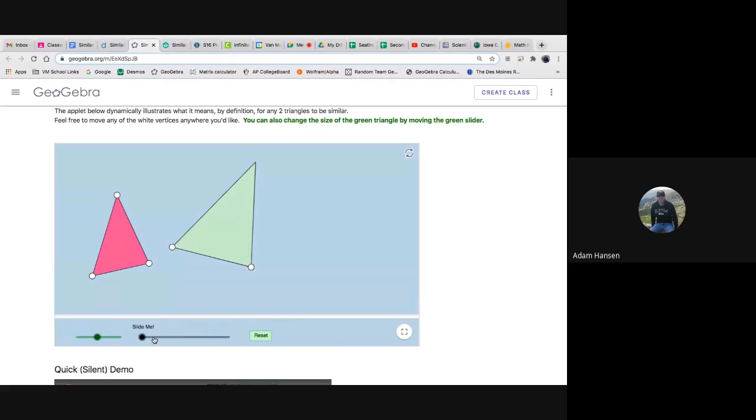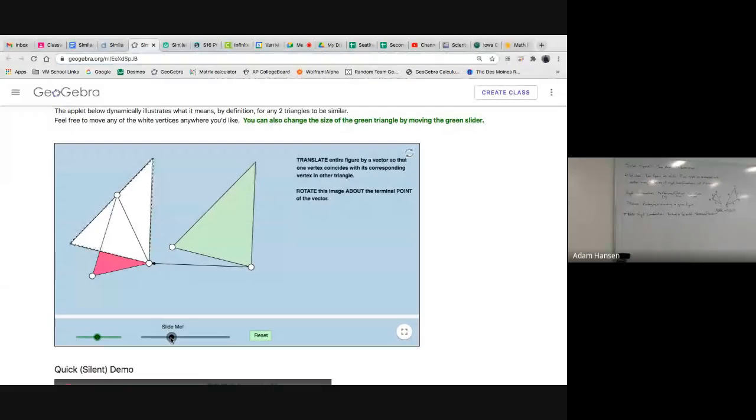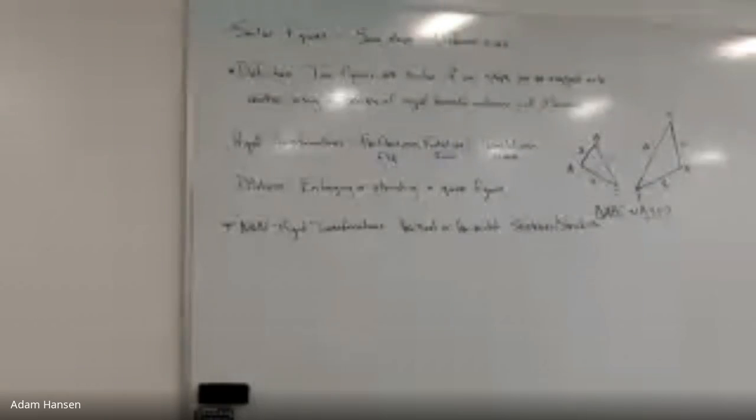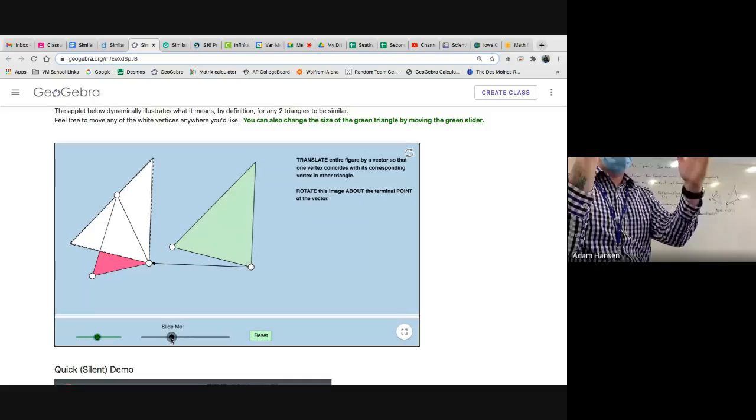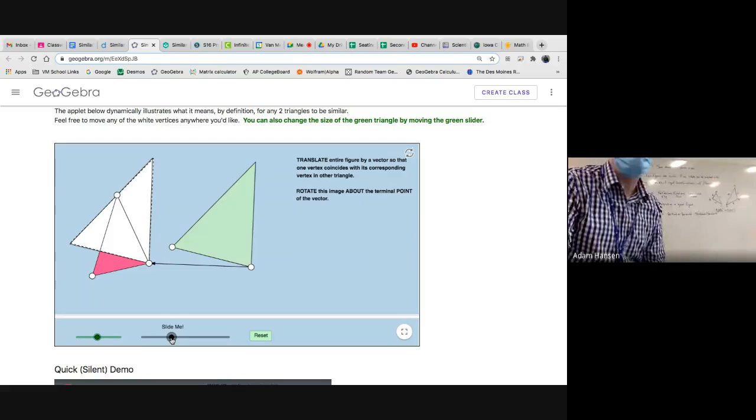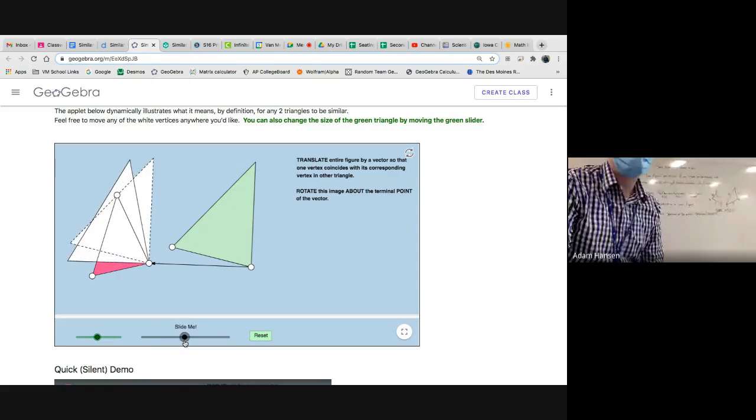So let's start using this slider here. The first thing I'm going to do, I'll move all the corresponding vertices from here to here, from here to here, here to here. So now what do I do next? Rotate it. I got to change the orientation. Isn't that pink triangle kind of pointing a little bit further down than the green triangle?